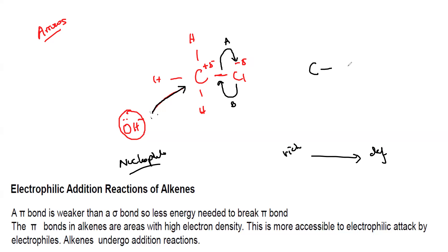If the carbon–chlorine bond is breaking down and the chlorine is taking both electrons, how should I draw the arrow — like this or the other way? The important thing is where the electrons start and where they end. When the carbon–chlorine bond breaks, the electrons are between carbon and chlorine and end up at chlorine, so chlorine takes those electrons. Therefore, option A is the correct representation.